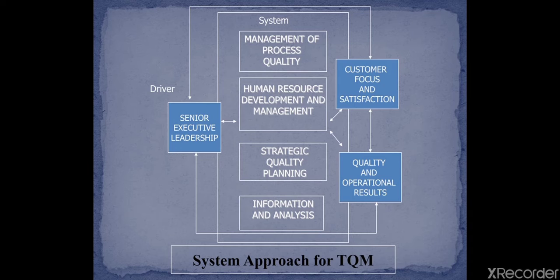Now the system diagram for TQM. In this diagram, the driver is the senior executive. The system components include management process, human resource management, strategic planning, and information analysis. All of these work together with the goal of achieving customer satisfaction and quality operational results — this is the system of approach for TQM.